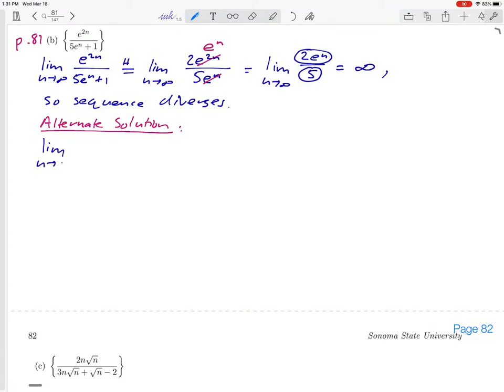We're going to start at the beginning of the problem again. Instead of using L'Hopital's rule, what we're going to do is look at the denominator and try to pick out the thing in the denominator that grows the fastest. We've got 5e to the n and we've got a plus 1, and the thing that gets biggest the fastest is the e to the n.